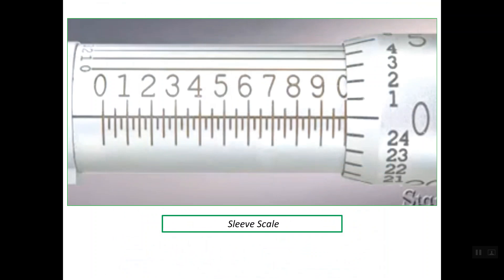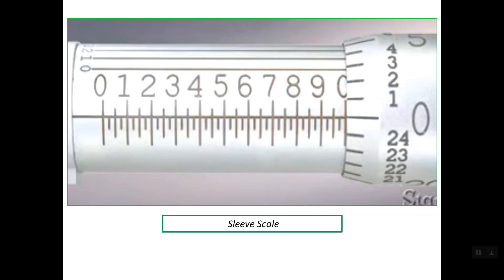Let's recall how to read the sleeve scale. As discussed in the last presentation, we have a scale of 1 inch length on the sleeve. This 1 inch is divided into 10 equal partitions, so each partition is simply 1 tenth of an inch. The main lines on the sleeve scale are read accordingly.